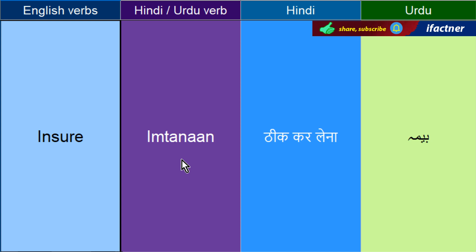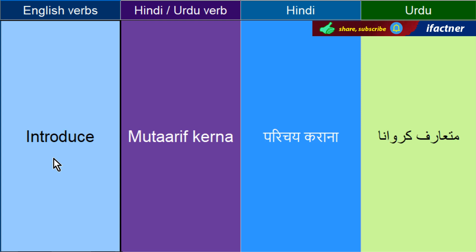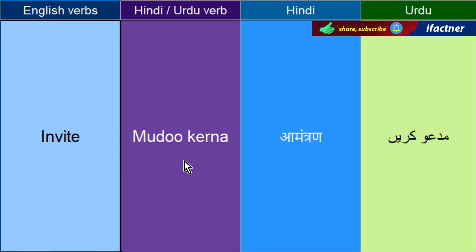Jo beema hota hai usko keha jata hai Insure, insure kerna. Shamil kerne ko kehtay hain Integrate kerna. Isi se nikkla hai Integration. Mutarif kerna — Introduce. Jis saan aap kisi ko apna taarruf dayta hai. Aijad kerna — Invent. Madhu kerna, jis saan party ke liay madhu kerna — Invite.